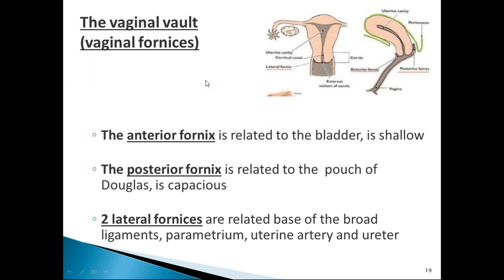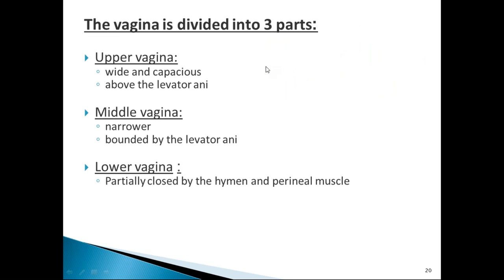The vaginal fornices are formed when the vagina gets attached to the cervical part of the uterus, forming four fornices: one anterior, two lateral, and one posterior. The anterior fornix is related to the bladder. The posterior fornix is the deepest, related to the pouch of Douglas. The lateral fornices are related to the broad ligament, where uterine arteries and the ureter are found.